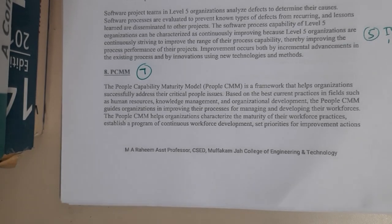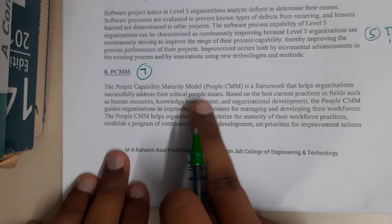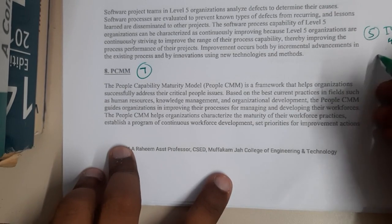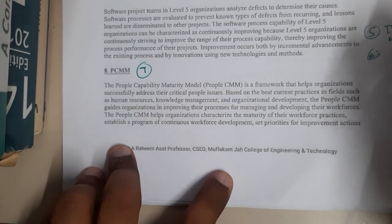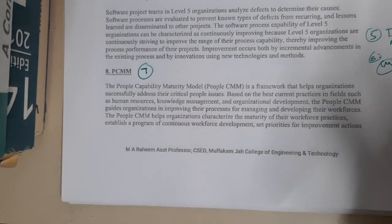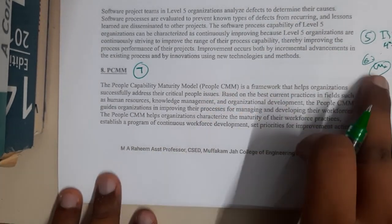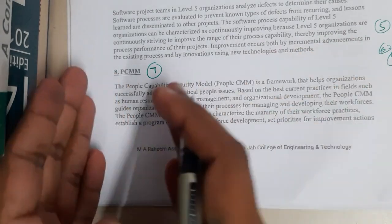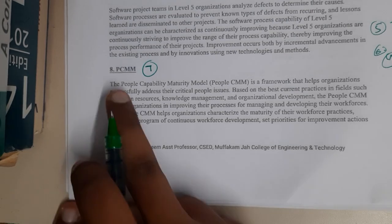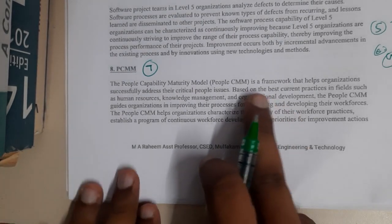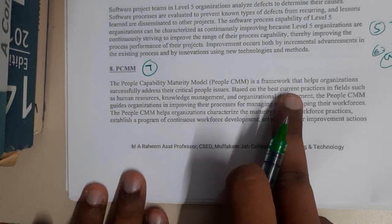We are back with our next lecture. Let us continue with the PCMM — the People Capability Maturity Model. In the last lectures we discussed ISO 9000 and CMM. PCMM is an updated or different type of CMM. Basically, in CMM it is with respect to your company, but if we change that company perspective to a person or employee, that is called PCMM.